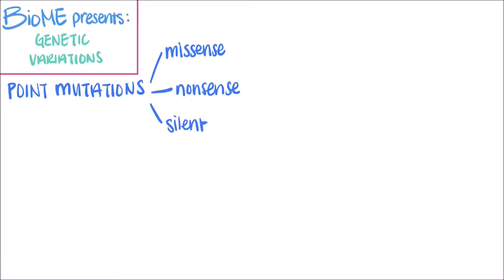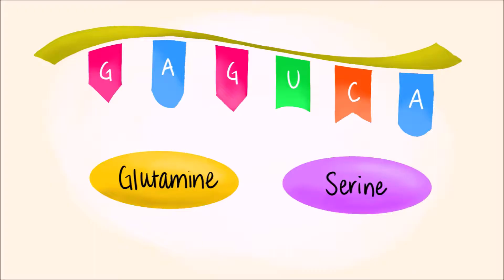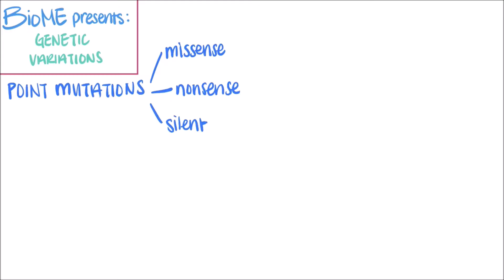Missense mutations occur when a change in a single base pair causes a change in the amino acid coded. For example, an mRNA that normally codes for the amino acids glutamine and serine could have a missense mutation, causing the last three amino acids to code for leucine instead. An example of a resulting condition would be sickle cell anemia, which is caused by a single missense mutation.